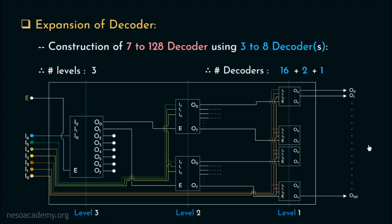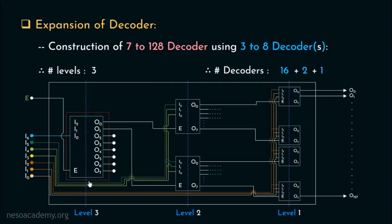So this is the entire organization — impressive, right? Now looking at the organization, one can easily notice that although the decoders of both levels 1 and 2 are being used to their fullest capacity, the decoder of level 3 on the other hand is not. Apart from these two output lines, the rest are left unused. So using a decoder of this configuration is actually wastage here. We could have reduced the cost if we had used something else — a different decoder with a different configuration.